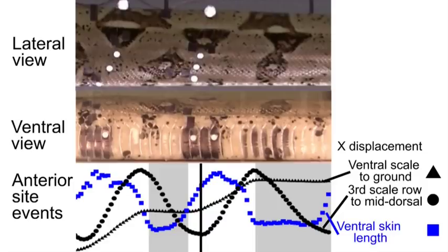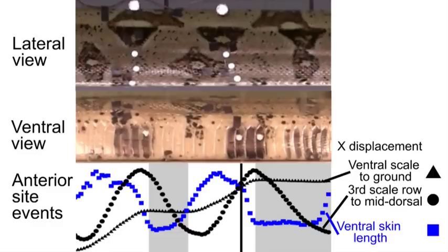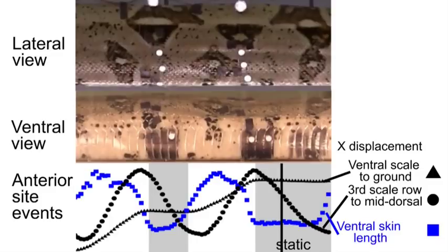During most of this time the belly skin is maximally shortened. The ventral skin is then stretched as it moves and slides forward both relative to the ground and the skeleton. Note that Lissmann documented long ago the ribs do not move relative to the vertebra.